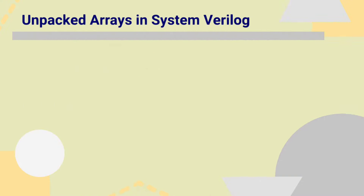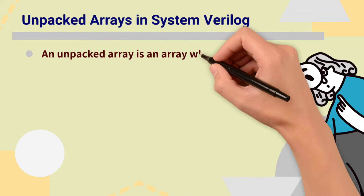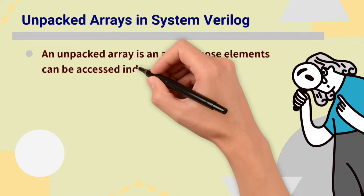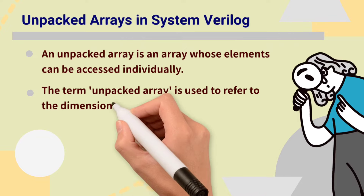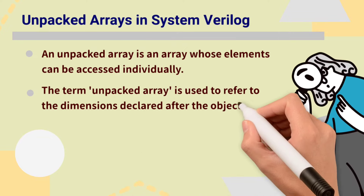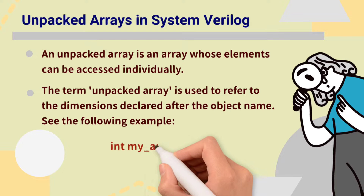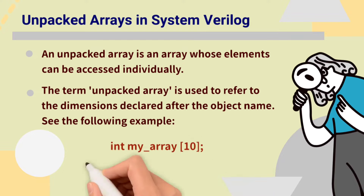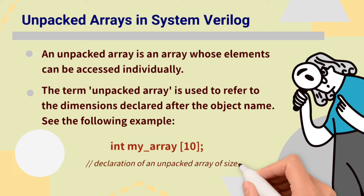Now let us see what unpacked arrays are in SystemVerilog. An unpacked array is an array whose elements can be accessed individually. The term unpacked array is used to refer to the dimensions declared after the object name.